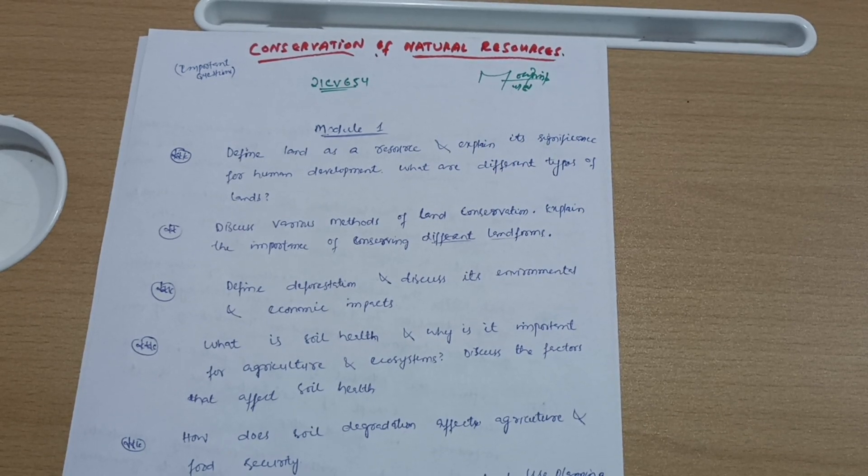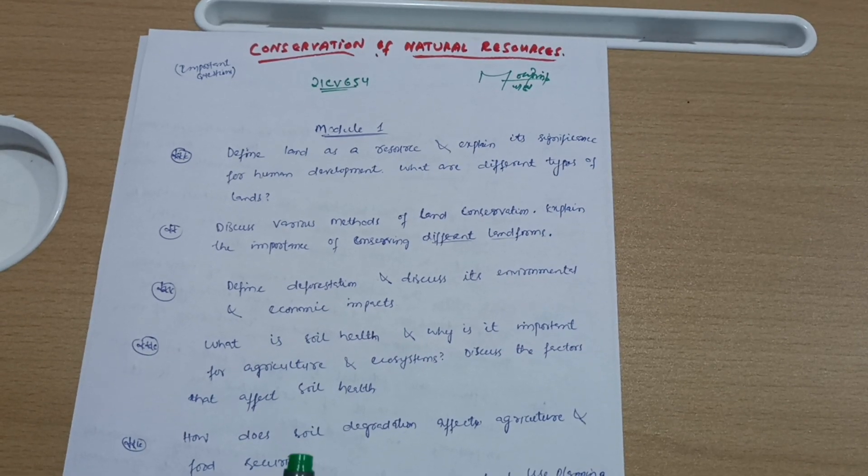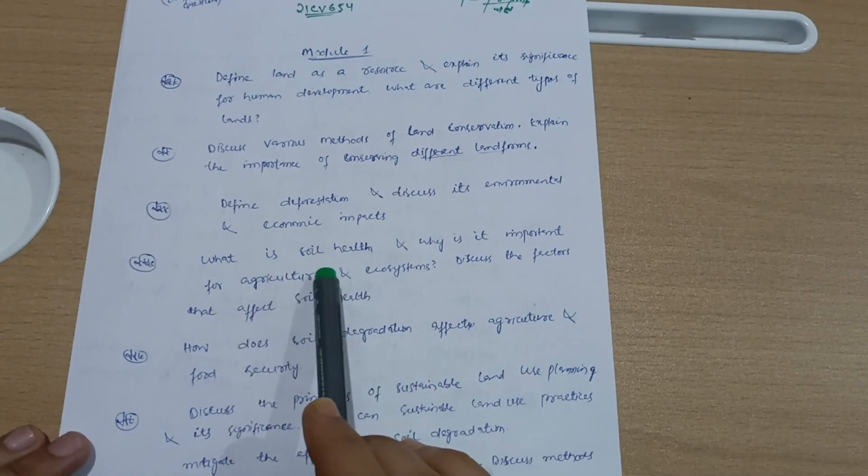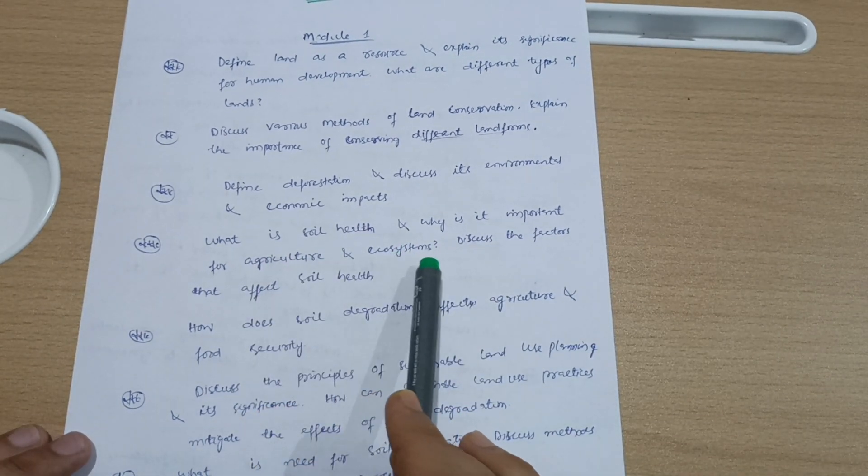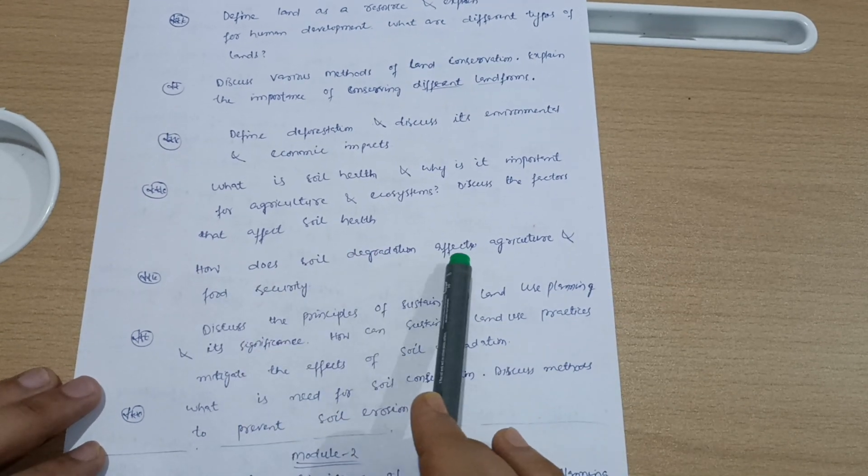Better to remember key points only. Next question: Define deforestation and discuss its environmental and economic impacts. What is soil health and why is it important for agriculture and ecosystems? Discuss the factors that affect soil health.